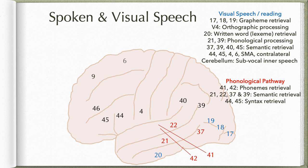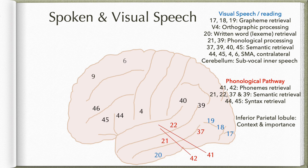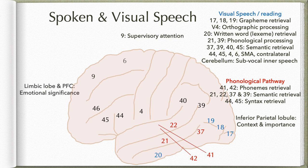So once this is done — at this point we have heard or read a particular language and understood the meaning of the words. The next sequence: this information is shifted to the inferior parietal lobule, which includes both the angular gyrus (area 39) and supramarginal gyrus (area 40), where context or importance is attached to what we are hearing or reading. Throughout this process, information is being shifted to area 9, the supervisory attention area. Information is also sent to the limbic lobe and prefrontal cortex to determine if there is any emotional significance to what we are hearing or reading.